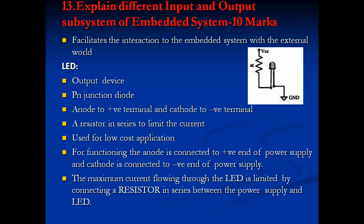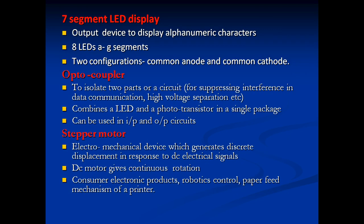For LED functioning, the anode is connected to the positive end of the power supply and the cathode to the negative end. The maximum current through the LED is limited by a resistor connected in series between the power supply and the LED. Next is the Seven Segment LED Display — an output device that displays alphanumeric characters. It has eight LEDs with segments A to G, and comes in two configurations: common anode and common cathode.